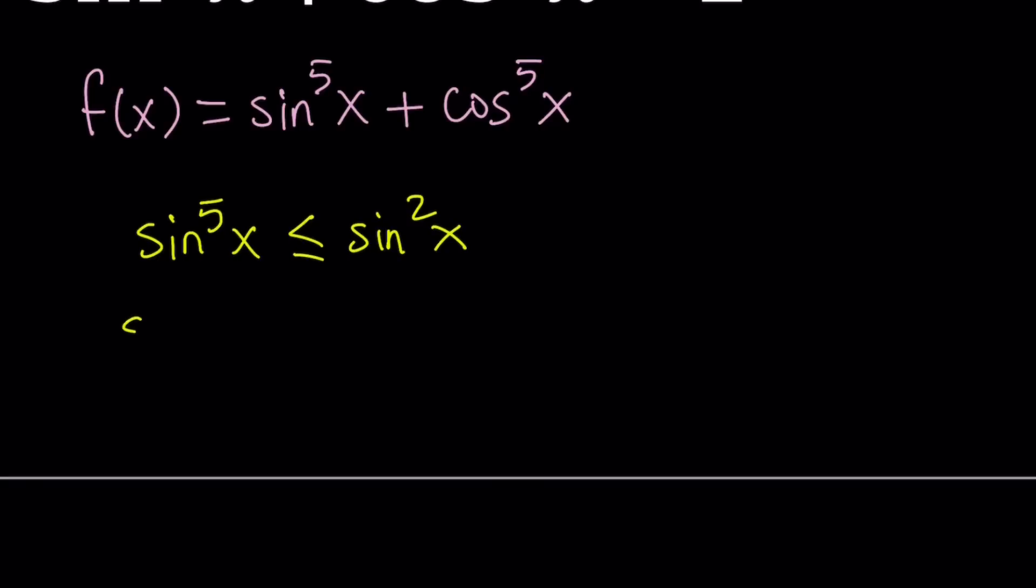So this is equivalent to subtracting sine squared from both sides. Nothing we do will actually mess with the inequality symbol. So we're not going to multiply or divide by a negative. So everything we do will be reversible. Make sense? So if I'm subtracting sine squared, you can add sine squared to get back. So this is going to give us a zero here, which is nice, because now we can factor sine squared out, and that would give you sine x to the third power minus one is less than or equal to zero.